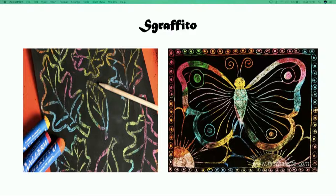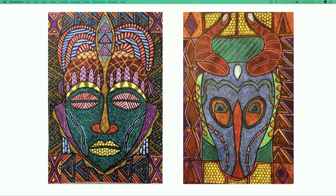Two thick layers of different colors are applied, then scratched on the top layer with a sharp improvised tool such as a toothpick to reveal contrasting patterns, textures and designs. Scraffito is a wonderful way to explore drawing and color simultaneously, and the results are vibrant and full of interesting marks.